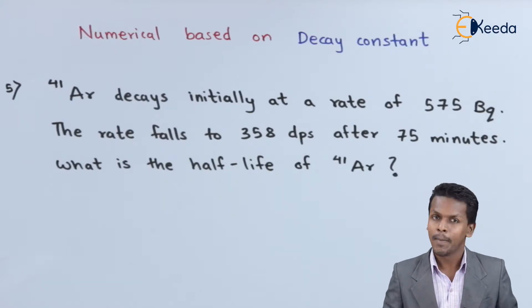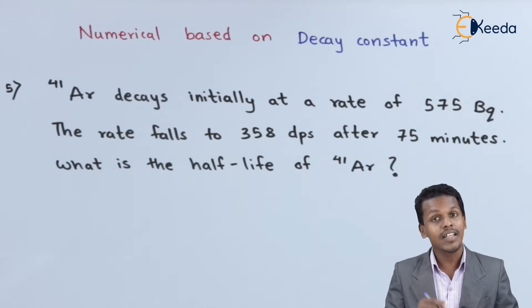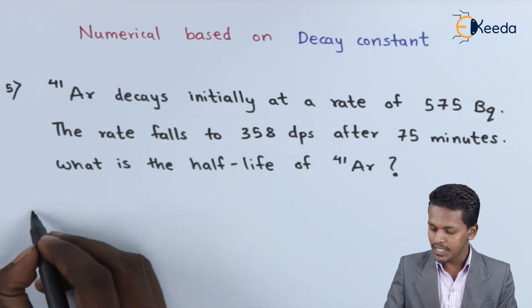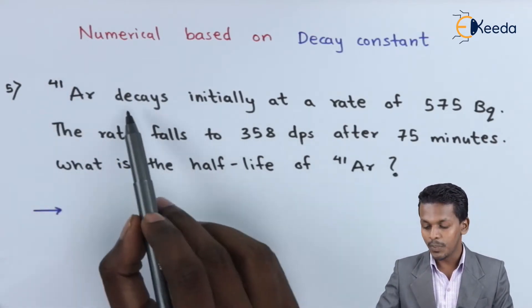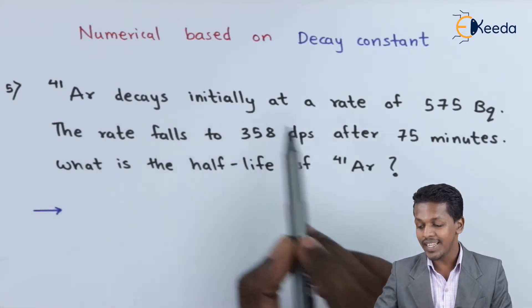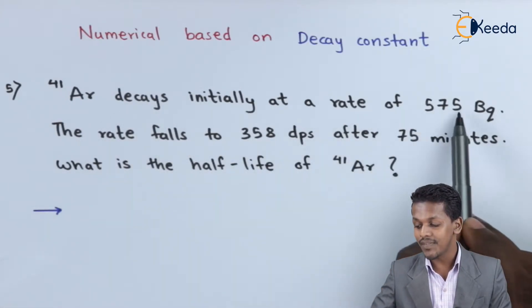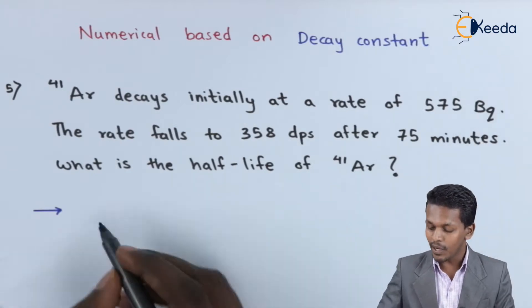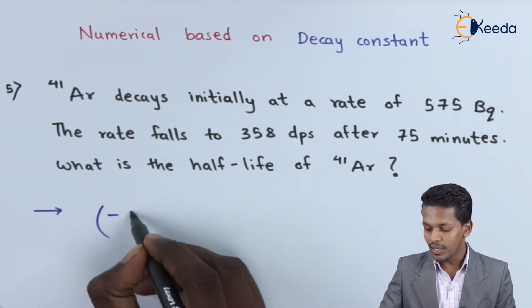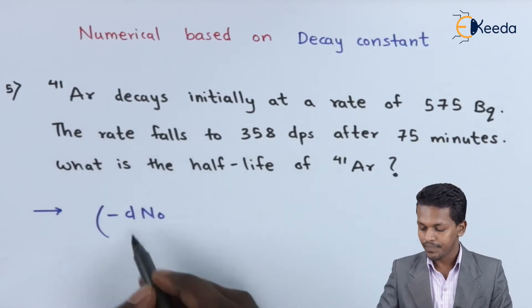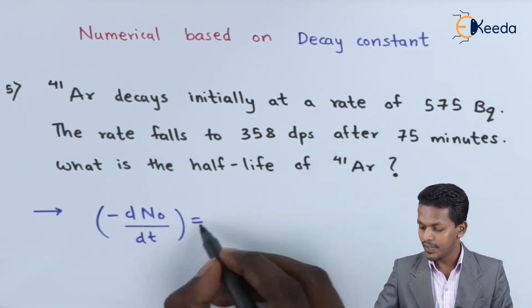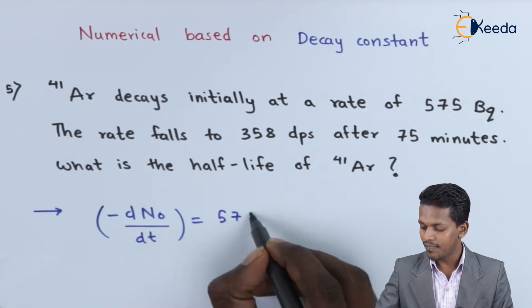Before getting the value of lambda (the decay constant), let us find out what data has been given in this question. This particular element, Argon-41, has been measured to decay initially at a rate of 575 becquerel (dps). That means the disintegration of Argon-41 occurs at 575 dps.